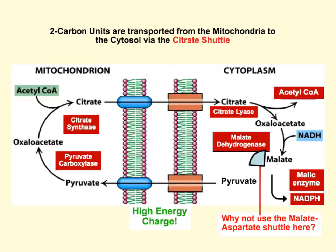The citrate shuttle works as follows: pyruvate goes in, pyruvate carboxylase forms oxaloacetate, and then citrate synthase forms citrate. High concentrations of citrate then pour out through the citrate shuttle. Citrate lyase reforms oxaloacetate and acetyl-CoA. Then malate dehydrogenase acts on oxaloacetate to form malate, and malic enzyme acts on malate to form NADPH and pyruvate.